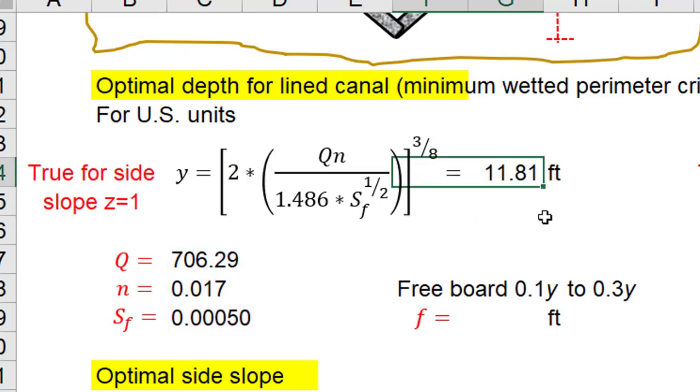And the water depth is equal to 11.81 feet. The free board goes from 0.1 multiplied by water depth to 0.3 multiplied by water depth.